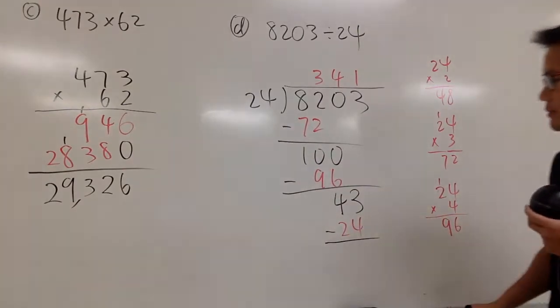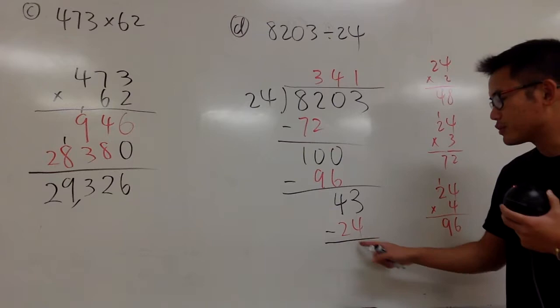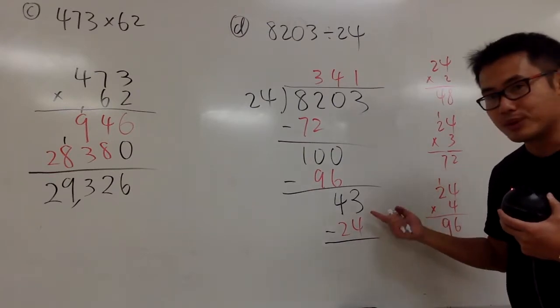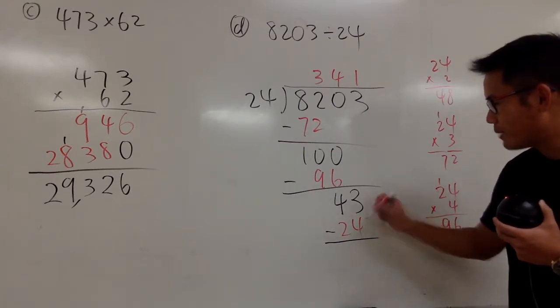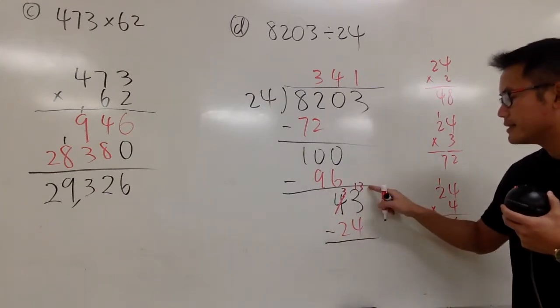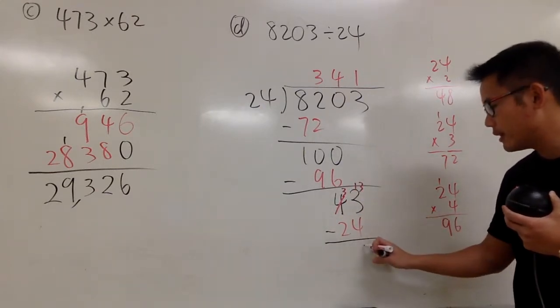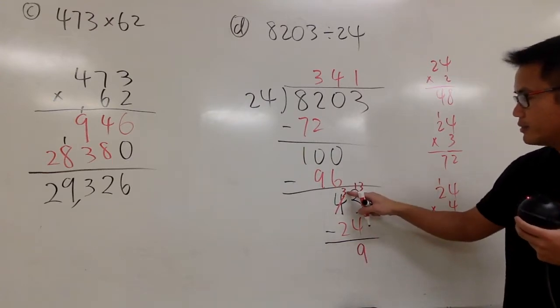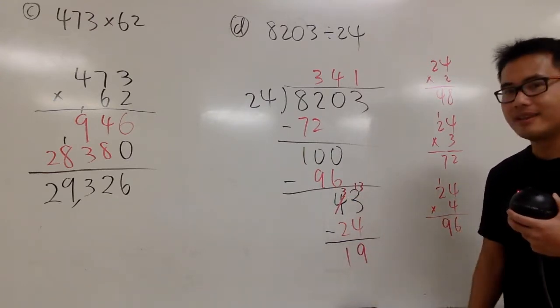And then we'll subtract. 43 minus 24. So we are going to do this: 3 minus 4, I have to borrow. So this becomes a 3, this becomes a 13. 13 minus 4, we get 9. And then, 3 minus 2, we get 1. And that's the remainder.